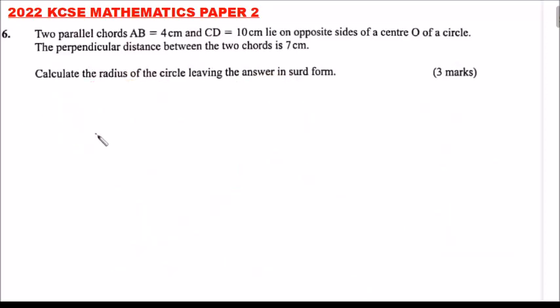This is 2022 KCSE Mathematics Paper 2, question number 6. Two parallel chords AB equals 4 cm and CD equals 10 cm lie on opposite sides of a circle center O. The perpendicular distance between the two chords is 7 cm. Calculate the radius of the circle leaving the answer in surd form. You get three marks.